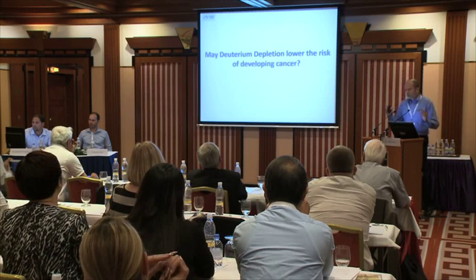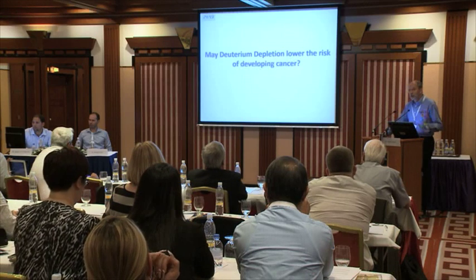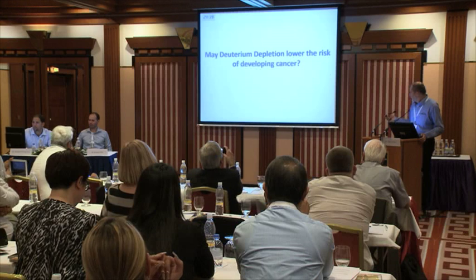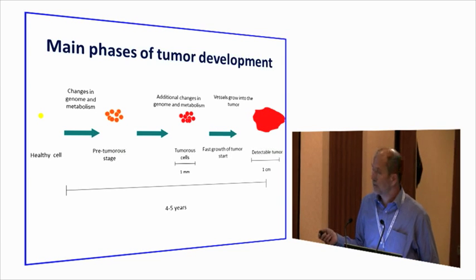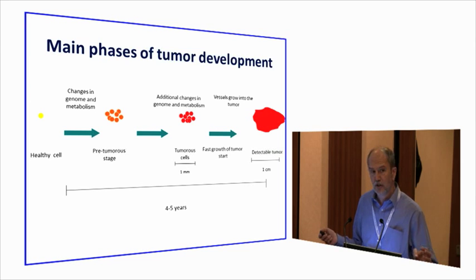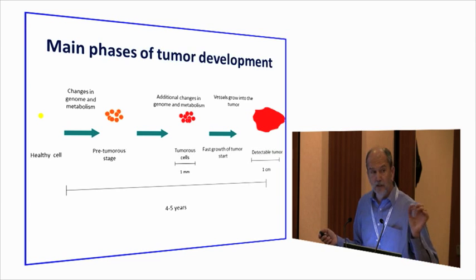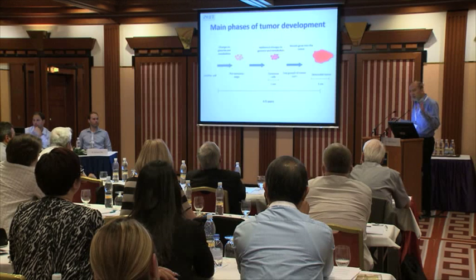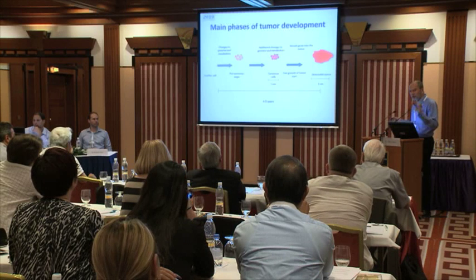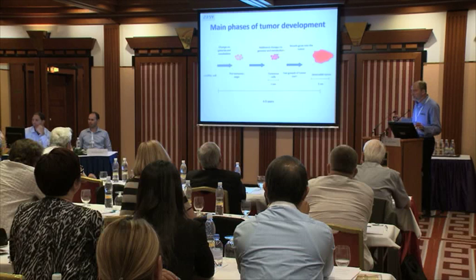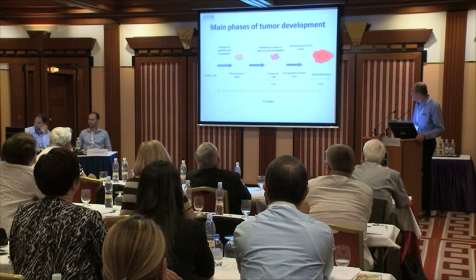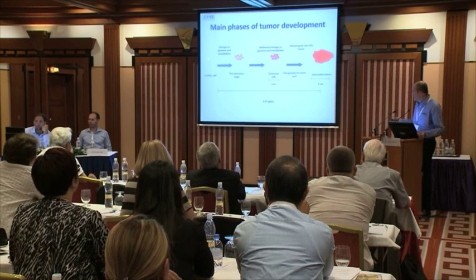The question I would like to close this section with: can deuterium-depleted water prevent cancer? We know that from one healthy cell, getting a one-centimeter tumor typically takes four to five years — with changes in metabolism and the genome progressing gradually toward a tumorous state. When this group of cells reaches one millimeter in diameter, growth stops because cells in the middle cannot get nutrition and oxygen by diffusion. They wait and send signals to vessels to grow into the tumor. We have plenty of time to eliminate these cells and reduce cancer incidence.